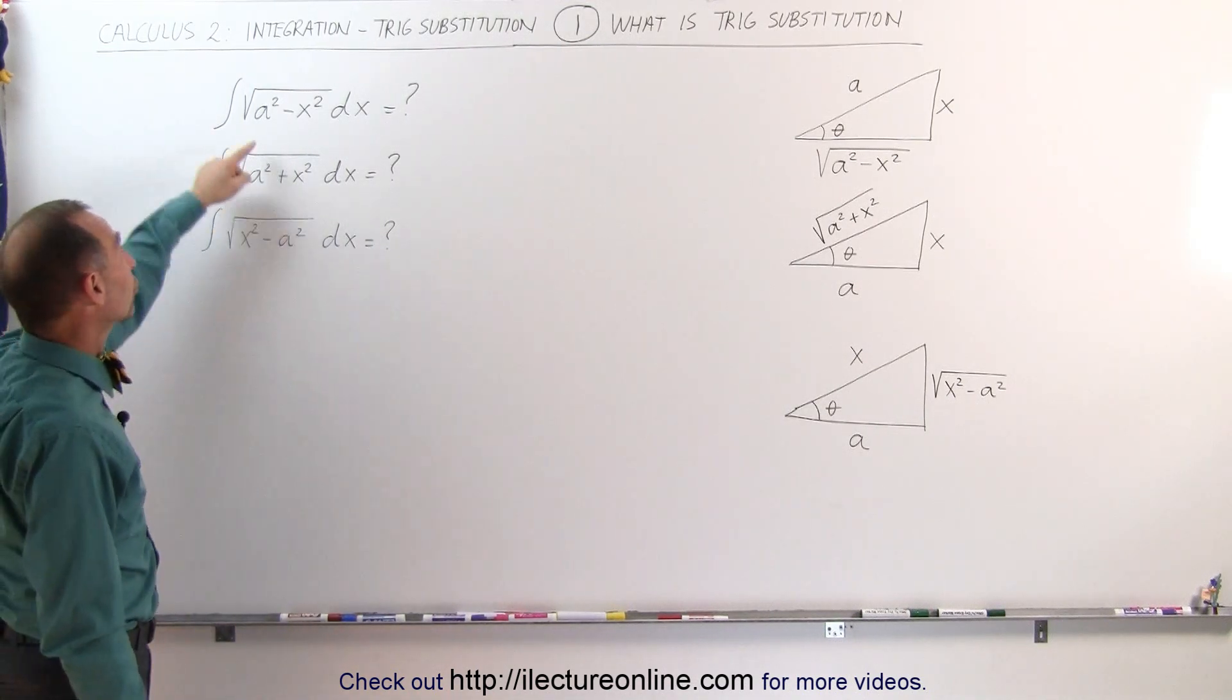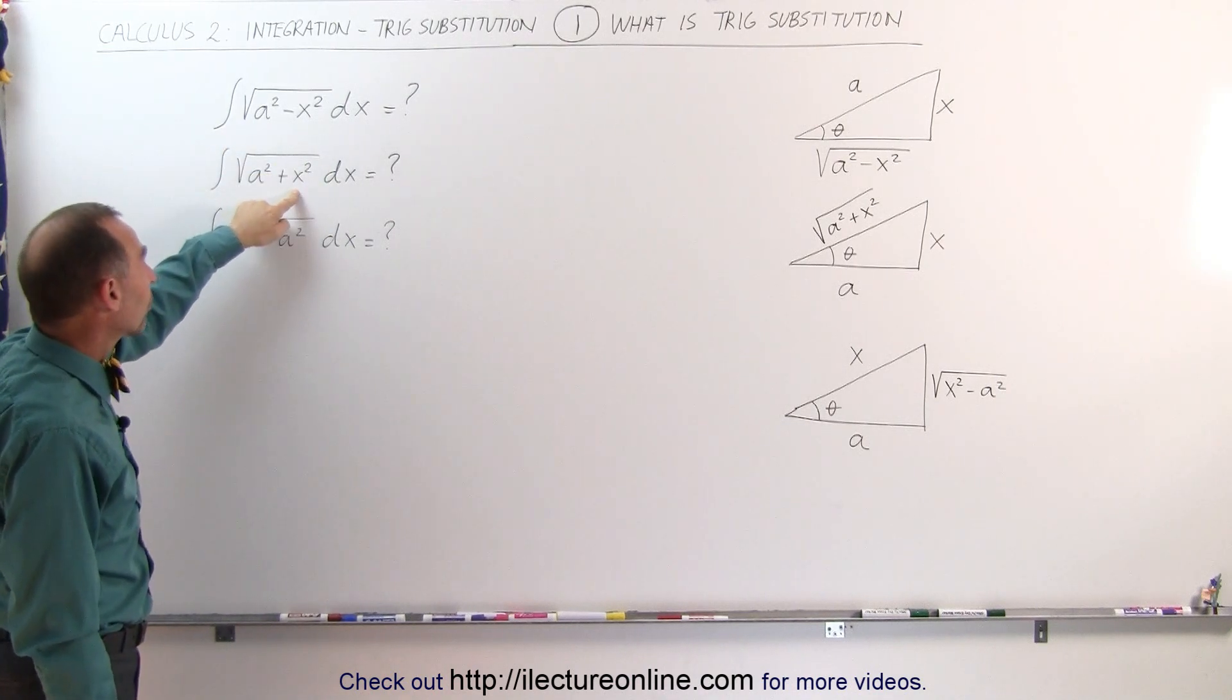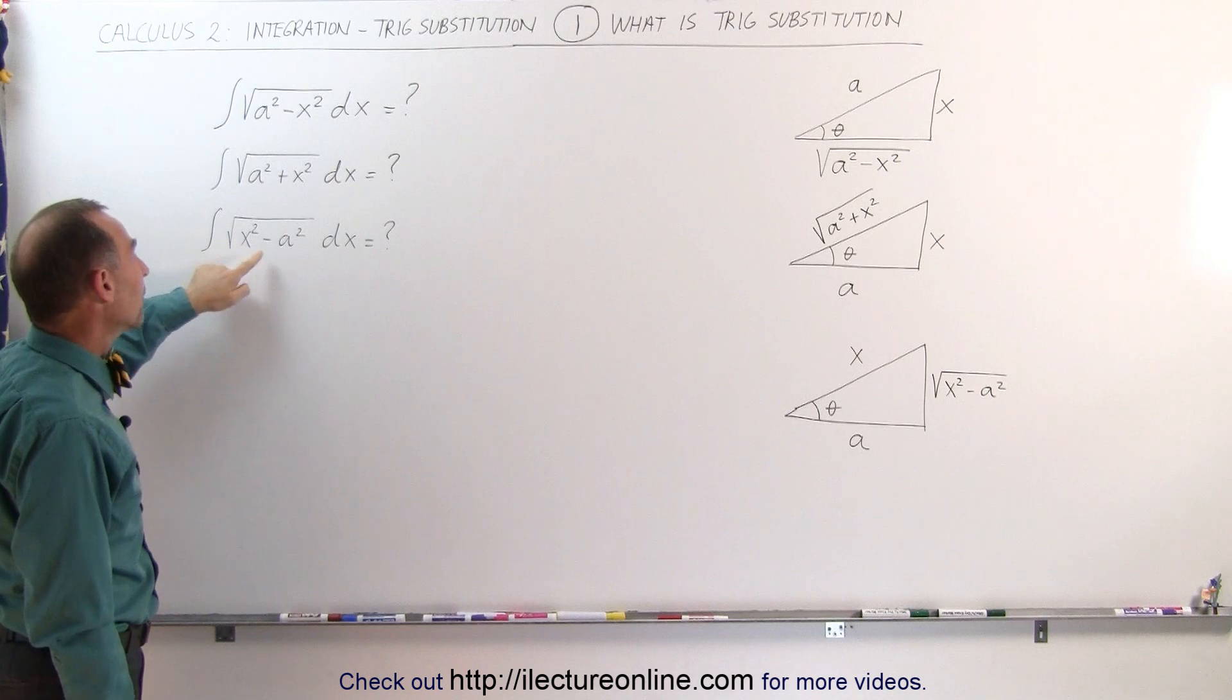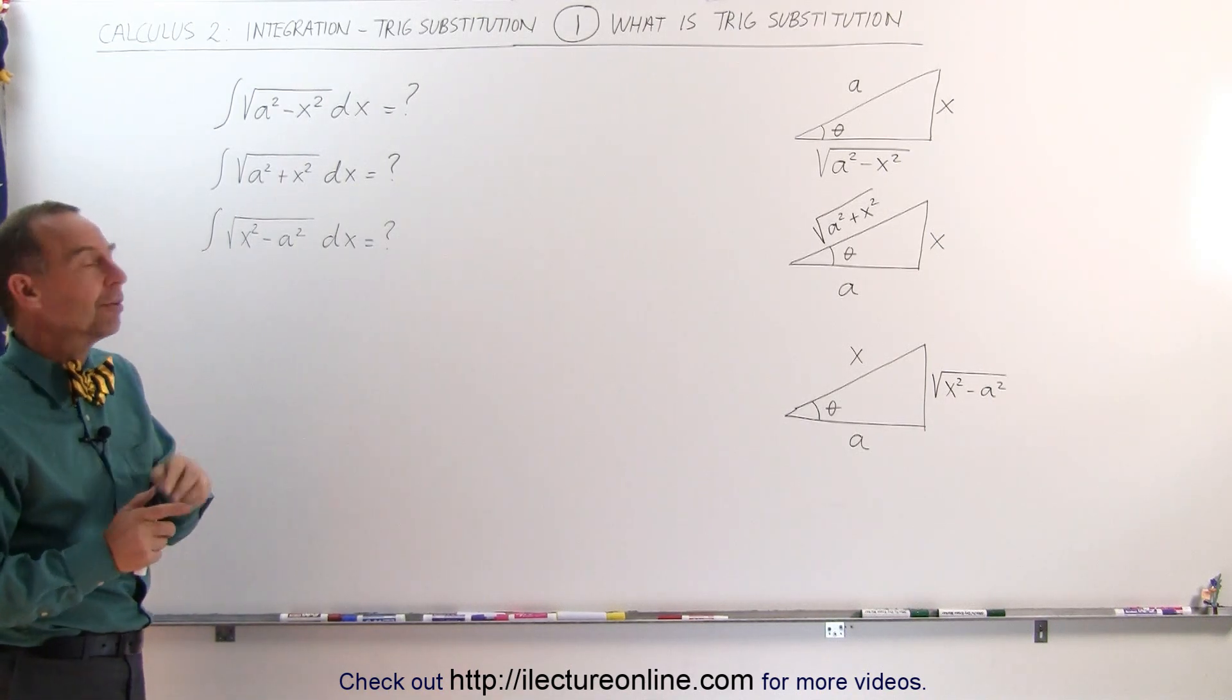The three integrations are the square root of a squared minus x squared, the square root of a squared plus x squared, and the square root of x squared minus a squared. Now what we do is we substitute in for x a particular value.